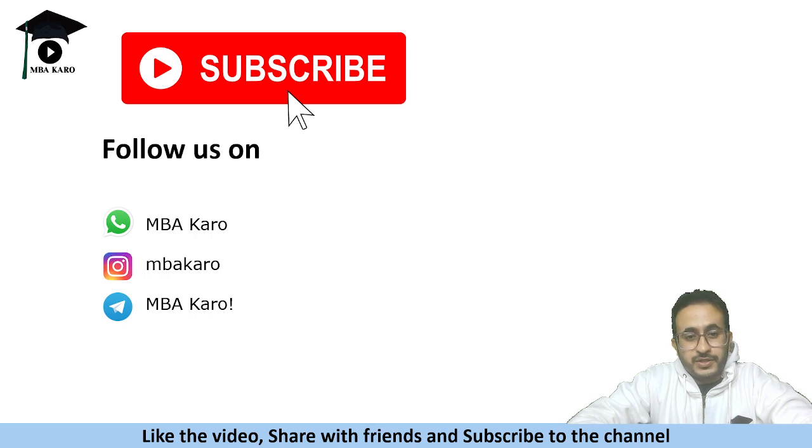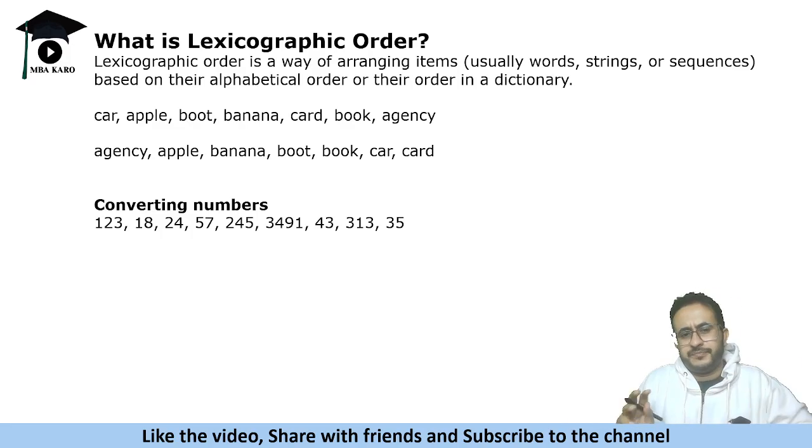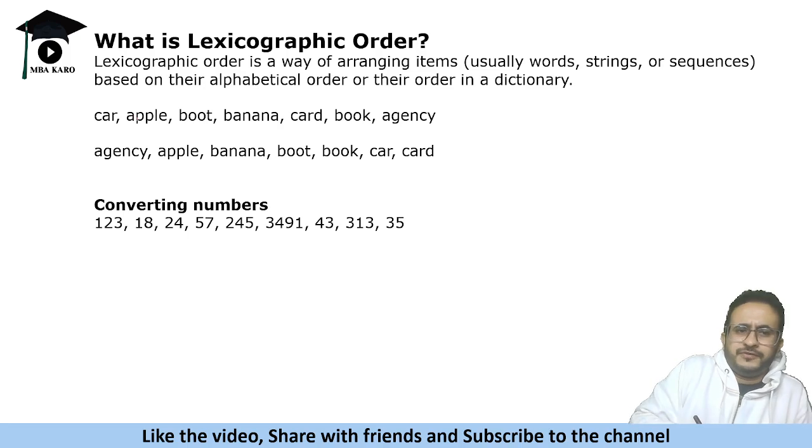If you are new to the channel, please do subscribe and follow us on social media platforms. Let us first understand what is lexicographic order. It is a way of arranging things on the basis of their alphabetical order or how they appear in a dictionary. So when words are given, you can easily arrange them in alphabetical order.